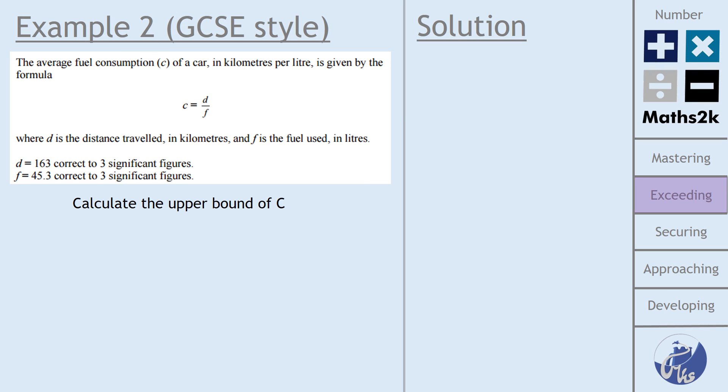But if we're going to find that upper bound of C, we're then going to need to make sure we do this calculation where we find the upper bound of D and divide it by the lower bound of F. This would then make sure that the value that we get at the end of that calculation would be the largest possible value we can have. So finding our bounds using the ideas that were discussed earlier in the video, we would then perform the division. And in this case, I've rounded the answer sensibly at the end.